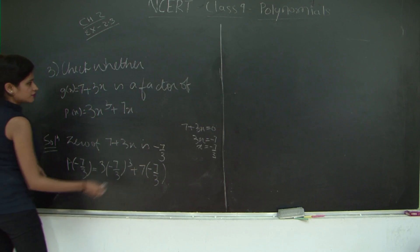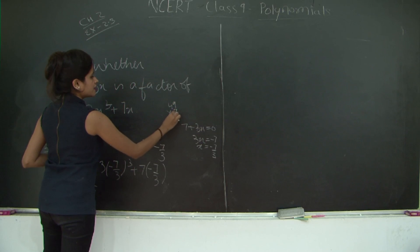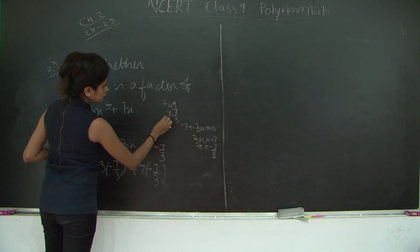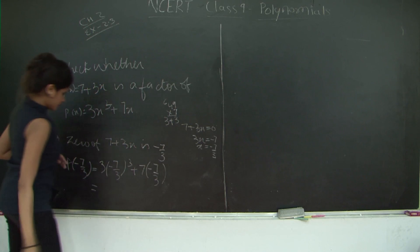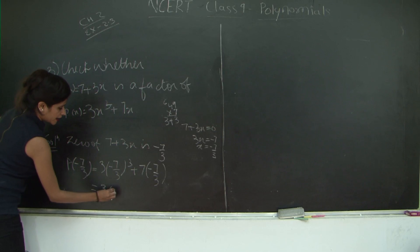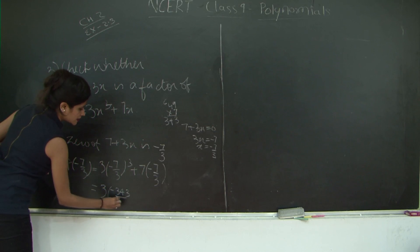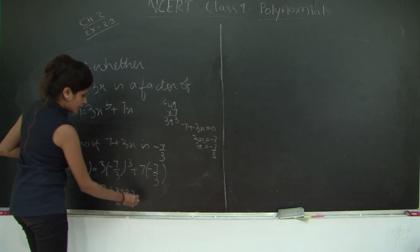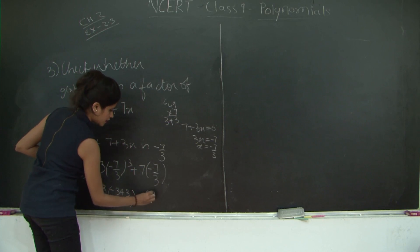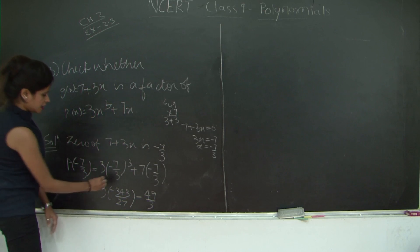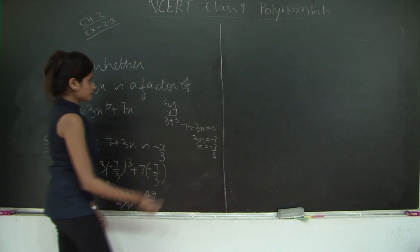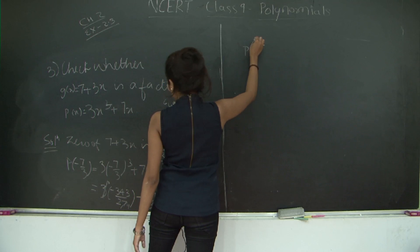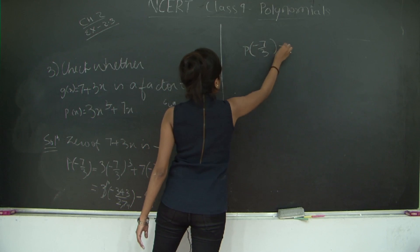So 7 cube is 49 into 7, 7 nines are 63, 7 fours are 28, 343. So this is minus 343 upon 27 minus 7 times 7 is 49 upon 3. Let's see if anything is cancelling. 3 ones are 3, 3 nines are 27.